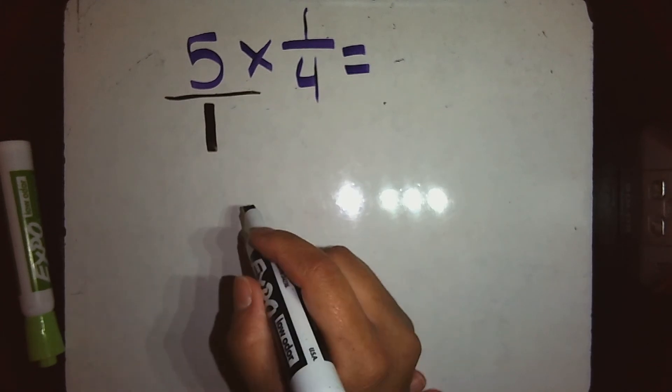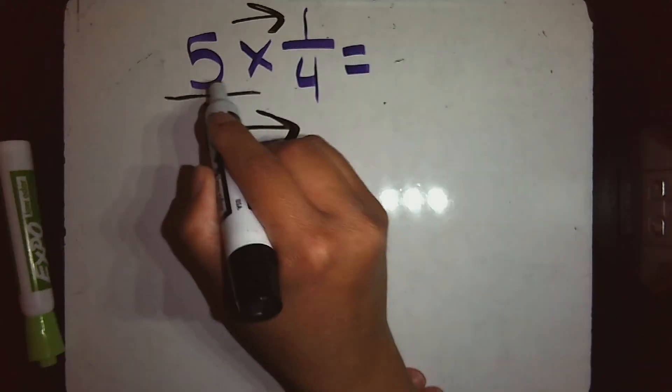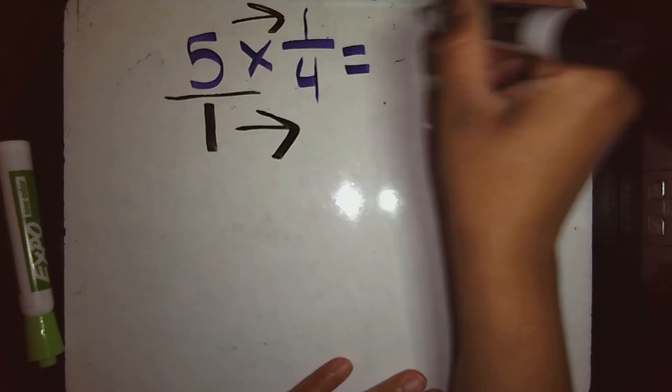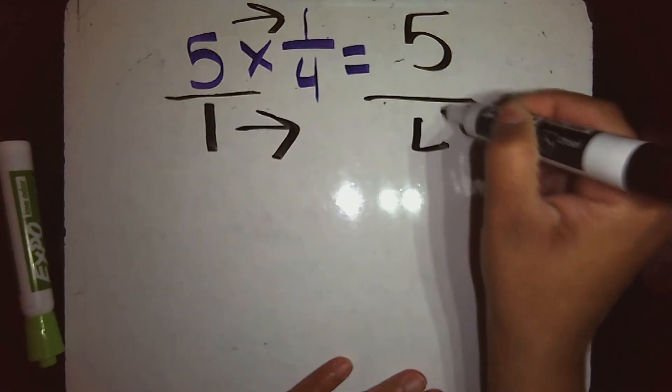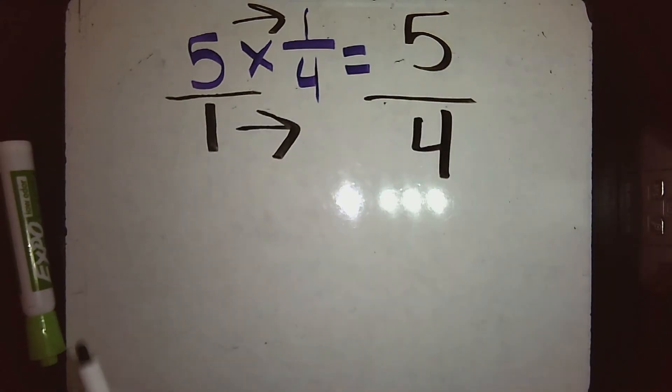Then I multiply straight across. So I have 5 times 1 is 5, and 4 times 1 is 4. So my answer is 5/4.